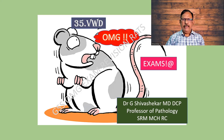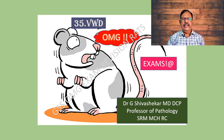Class 35 is on Von Willebrand's disease. The clotting factors — you should be able to go through the flow diagram: Factor 12, 11, 9, 10, and so on. At the other end, you will have the intrinsic mechanism. These are very important. Go through them, and then there will be a common pathway.